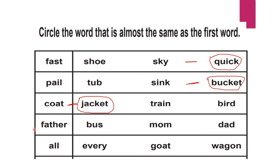Now 'father' — what will come? Is it 'bus'? No, bus is different. 'Mom'? Mom would be for mother. For father, it will be 'dad.' So we will circle 'dad' and give a hyphen to indicate meaning — father means dad.